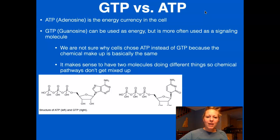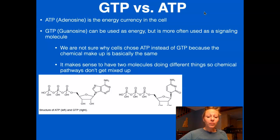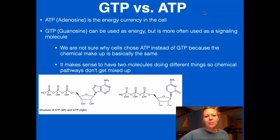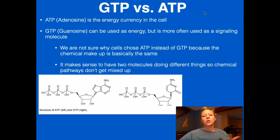We don't necessarily understand why that is, because GTP and ATP are very similar — they both have three phosphate groups, and GTP can be used for energy. But the cell tends to use GTP as a signaling molecule and ATP for energy. It does make sense that different metabolic pathways use different molecules, which helps keep those pathways from intertwining and getting mixed up. That is why we suspect GTP is used for communication while ATP is used for energy.